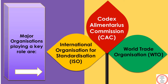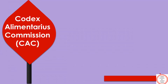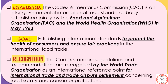The main organizations are Codex Alimentarius Commission, International Organization for Standardization, and World Trade Organization. Let's understand what Codex Alimentarius Commission is all about. For your understanding, I have already highlighted the key points which I believe will help you in memorizing.